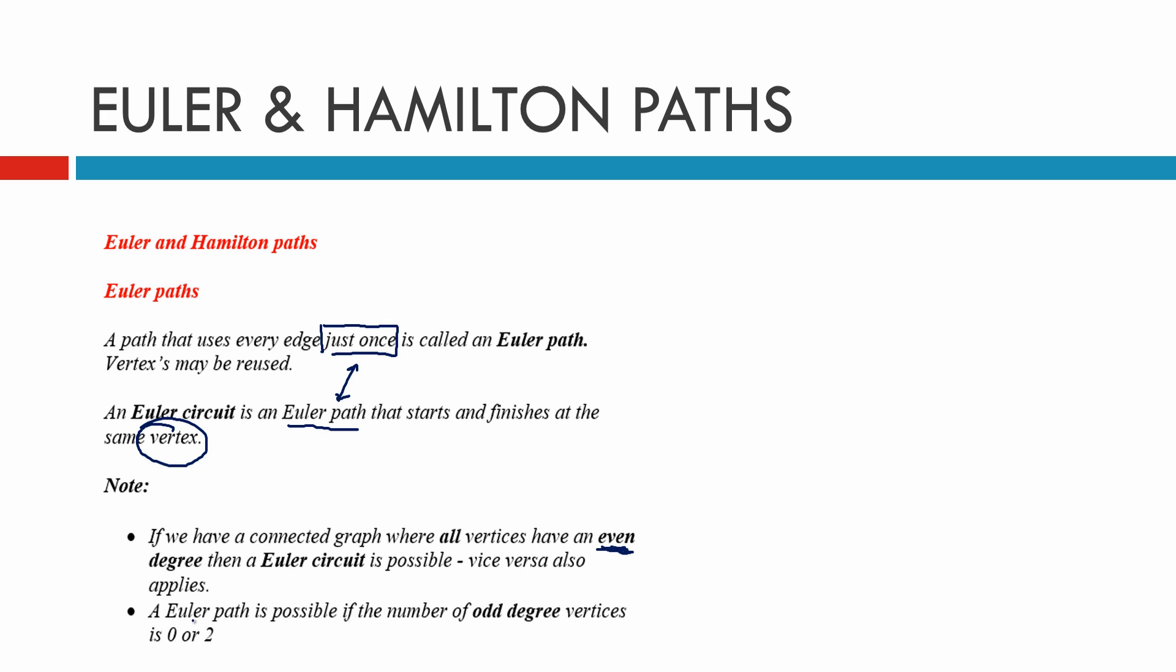An Euler path is possible if the number of odd degree vertices is zero or two. So you can't have more than two, and you can't have one - only zero or two odd degree vertices to have an Euler path. This restricts your Euler circuit as well.